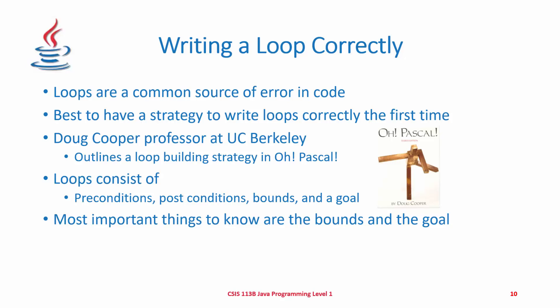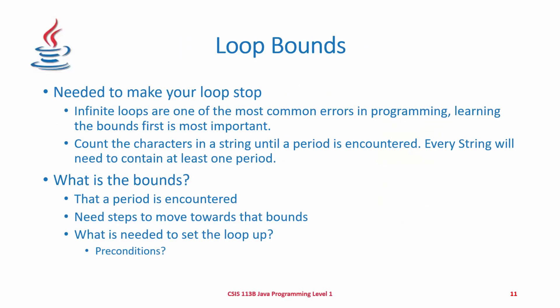It's very important to write your loop correctly. Loops are a common source of error in coding, so it's best to have a strategy. Professor Doug Cooper at UC Berkeley outlined a loop strategy in his book 'Oh Pascal.' Loops consist of preconditions, post-conditions, bounds, and a goal — the most important being the bounds and the goal. The bounds is what makes our loop stop. Infinite loops are one of the most common errors in programming. For example, counting characters in a string until a period is encountered requires that every string contain at least one period. The period encountered is the bounds, and we need steps to move towards it — which are the preconditions.